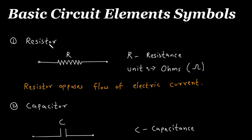Number one is resistor. Here we can see this is the symbol for resistor. This R represents the value of resistor, that is resistance. The unit of resistance is ohms, which is represented by omega. Resistor opposes flow of electric current. So this is the symbol of resistor, which is a basic circuit element.